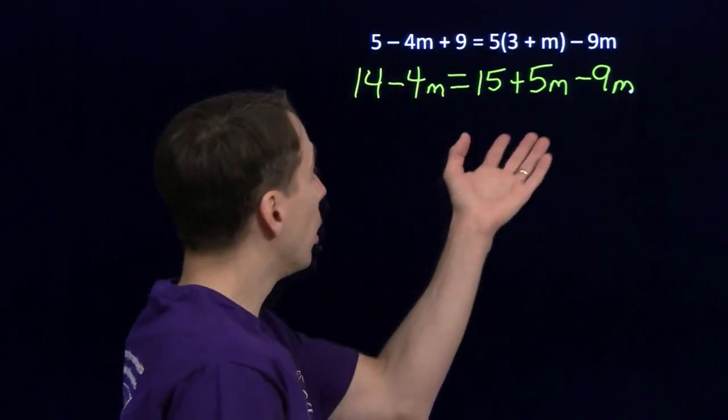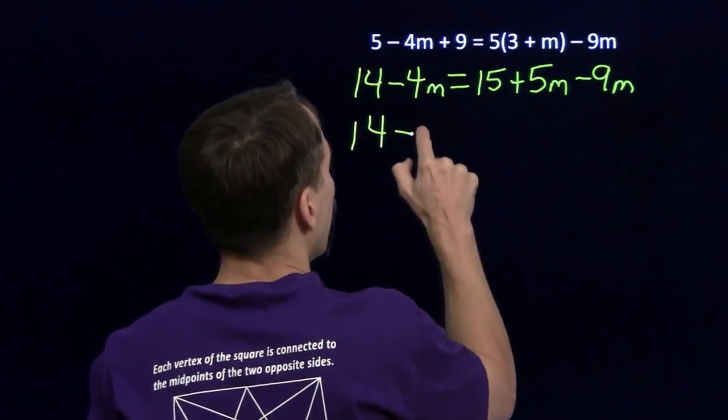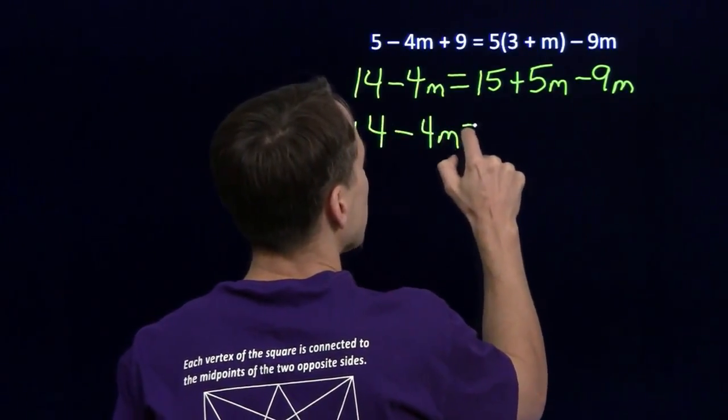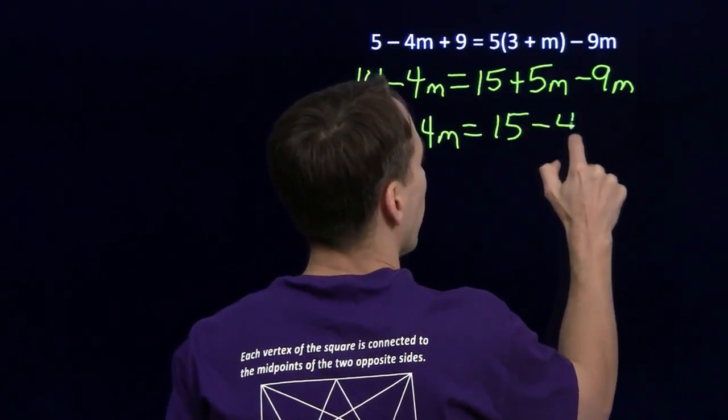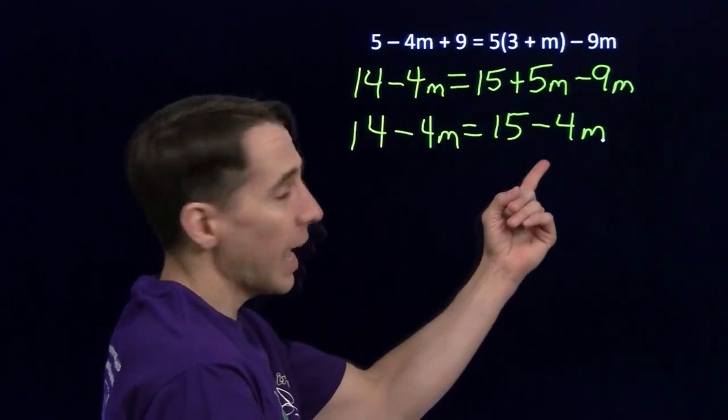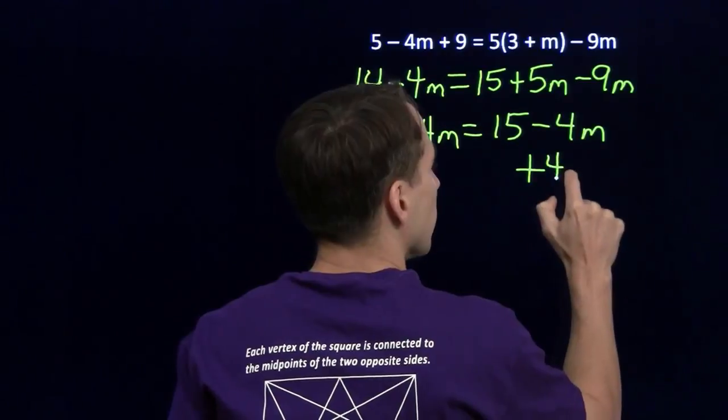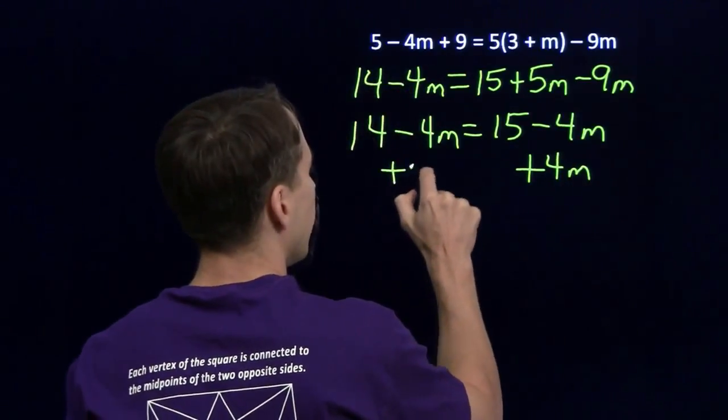We can't simplify the left anymore, but on the right, we can combine the 5m and the 9m. 5m minus 9m gives us minus 4m. Now, to isolate the variable, we get all the variables on one side, so I'm going to add 4m to both sides.